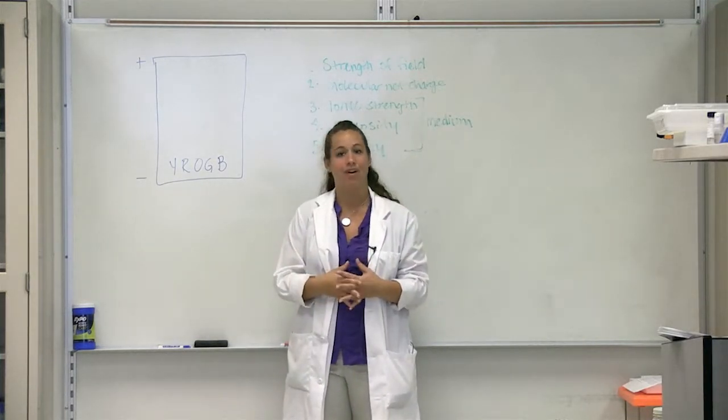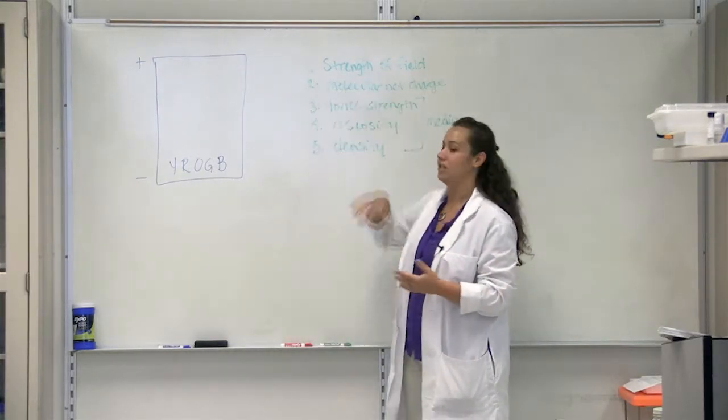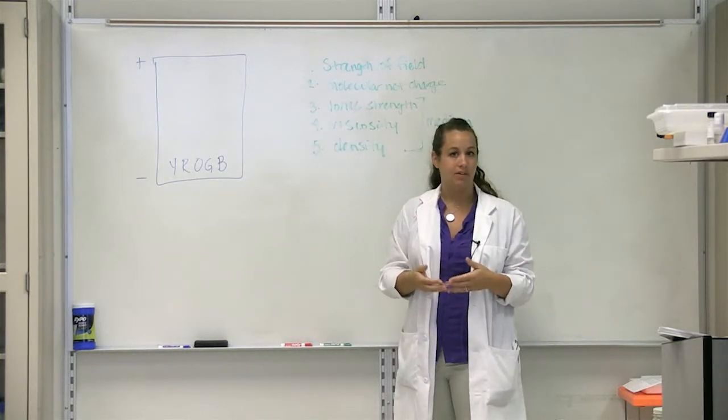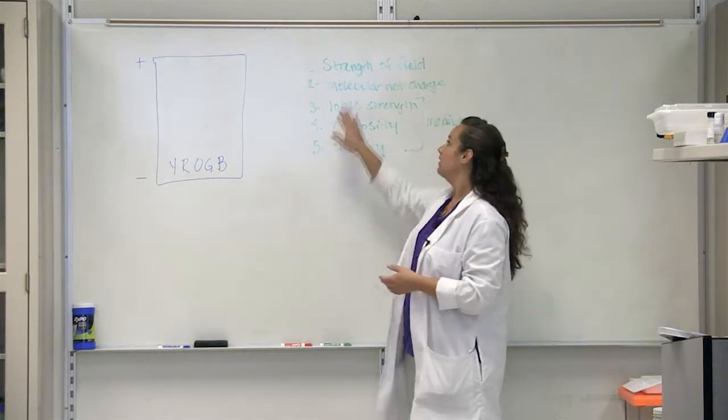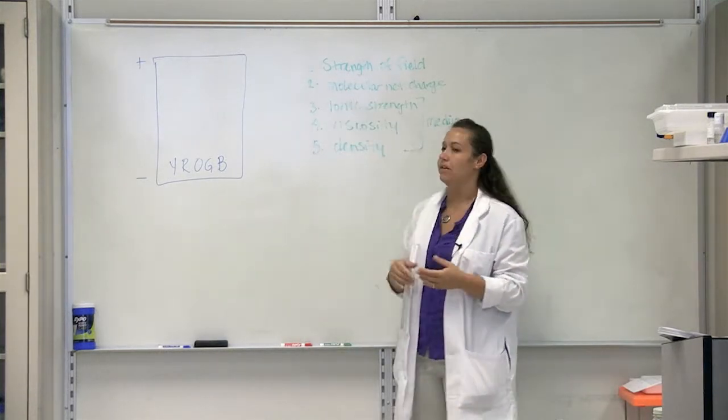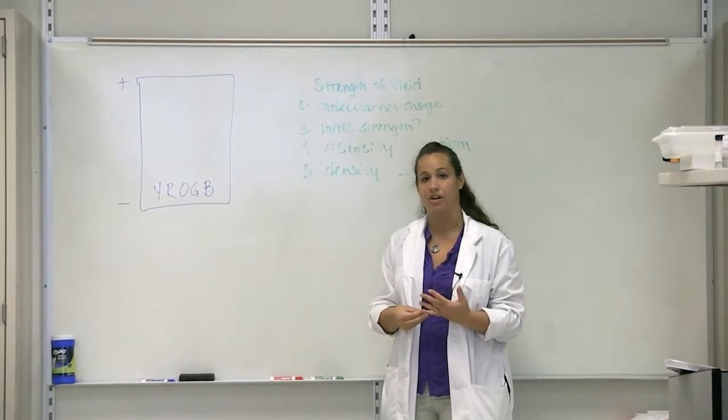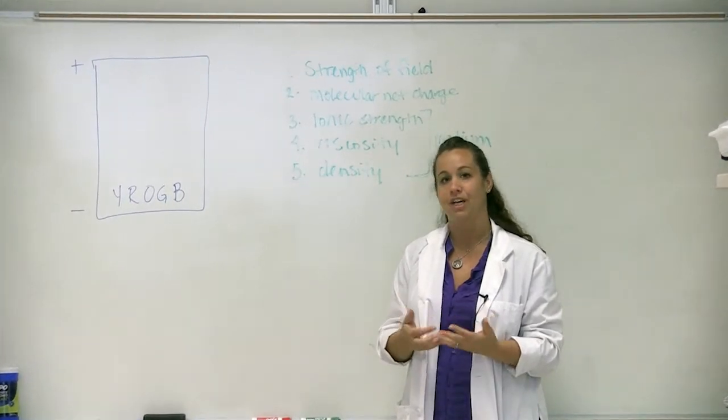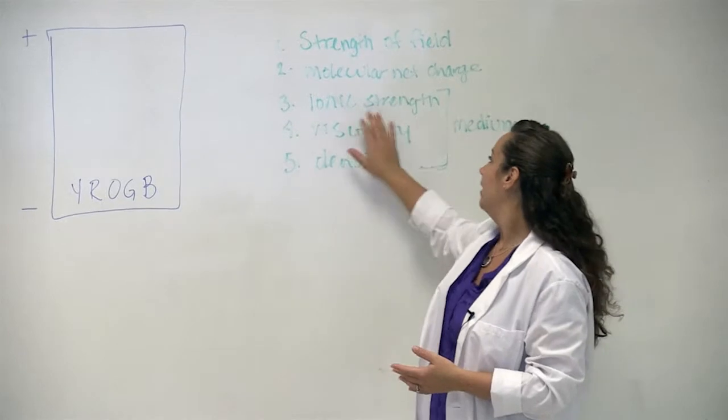If things go wrong, there are several things that you can consider. So the first thing that you can consider is the strength of the field that you're using. Did you use enough voltage? Do you need to increase your voltage? Do you need to decrease the voltage? Something to consider. The next one is going to be the net charge. Are you sure that you have assumed the correct charge? DNA is negative, but protein is one of those things that can change charge depending on the pH of its surrounding buffer.